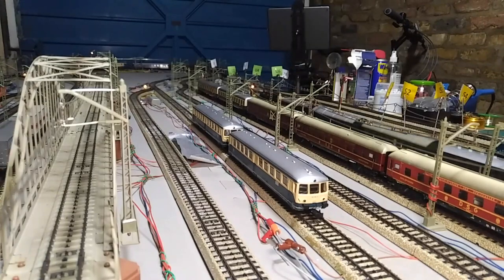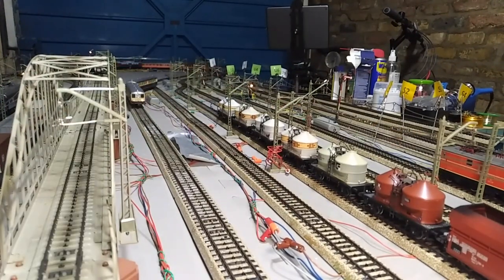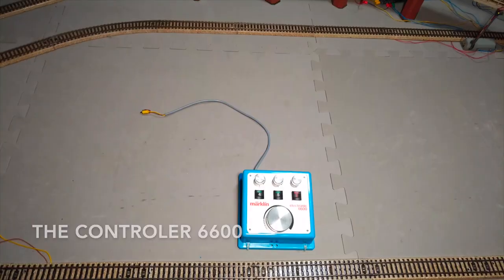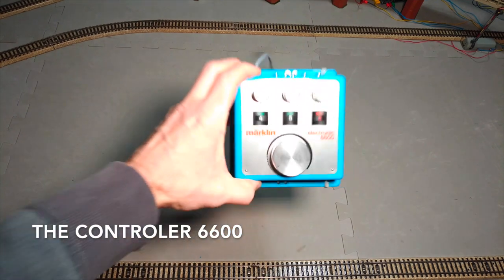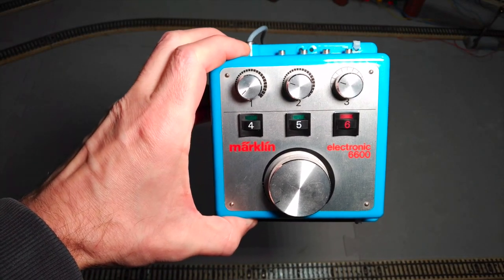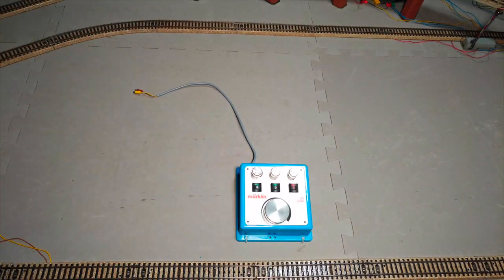In the last layout, I had installed a shuttle line in the middle of the layout with a rail bus going back and forth. To control it, I used a Märklin controller 6600 with its shuttle function. If you want some more information about this controller, I have done a little helper video which I've linked in the top right-hand corner of the screen now.